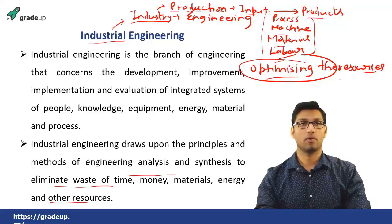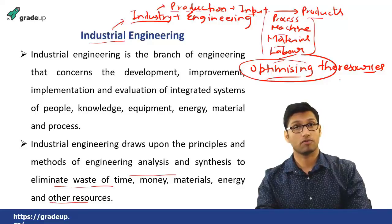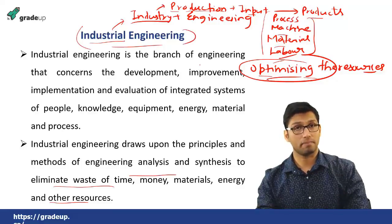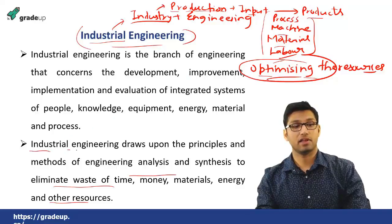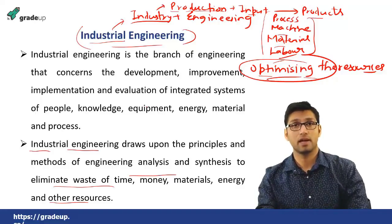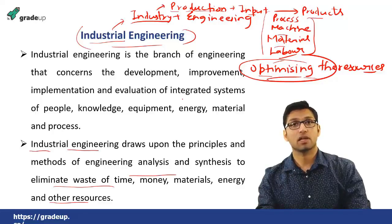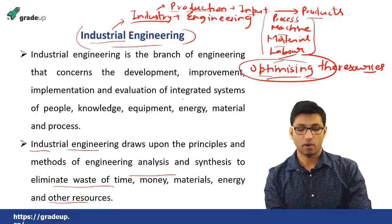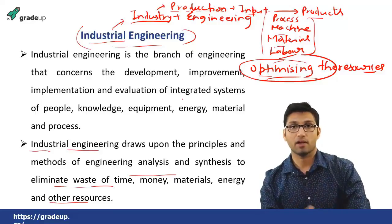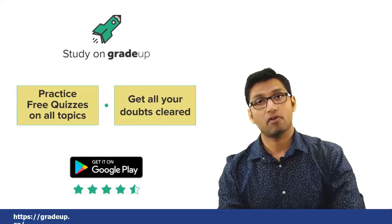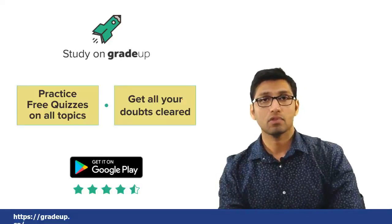The optimization of resources is done with the help of principles and methodologies laid down by industrial engineering. In this subject, we study those principles, methods, and methodologies followed to optimize resources so that we can make efficient utilization of resources to convert raw material into finished products.